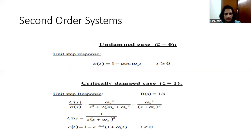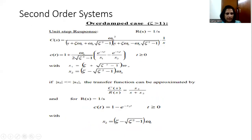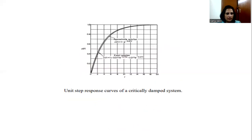Taking a specific case of ζ equal to 0, the unit step response is given as c(t) = 1 − cos(ωn·t). For the critically damped case where ζ equals 1, c(t) = 1 − e^(−ωn·t)(1 + ωn·t). For the overdamped case, the unit step response is given by the expression involving roots s1 and s2. These are the responses of the second order system for a unit step input.